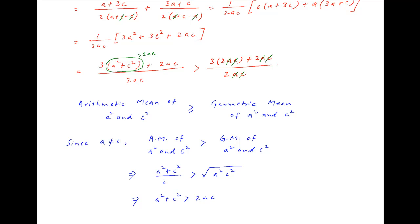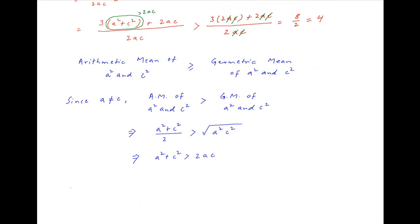ac cancels across the numerator and denominator, and this is equal to 8/2, which is equal to 4. Therefore, to summarize, we have established that (a + b)/(2a − b) + (c + b)/(2c − b) is strictly greater than 4, which is the required result.